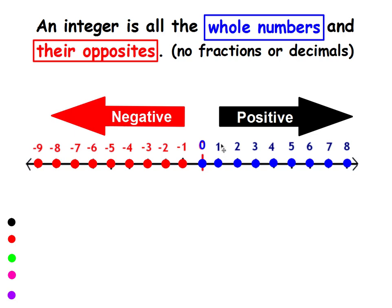For instance, if I had 1 and 1 half, it would be here on the number line. It's not an integer. It's between the whole numbers 1 and 2, so it's in between them.